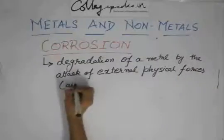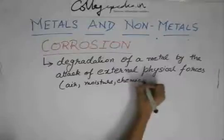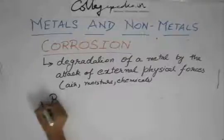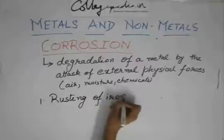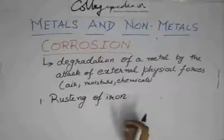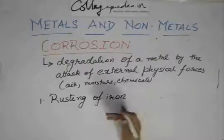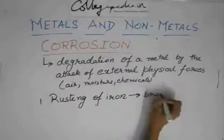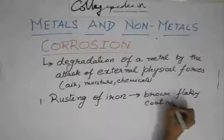Corrosion is caused by external agents like air, moisture, chemicals, etc. The most common form of corrosion is the rusting of iron. An iron object kept outside and exposed to air and moisture for a long time will develop a brown flaky coating — this is called rust.